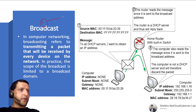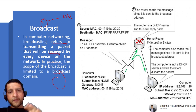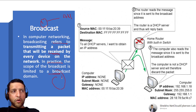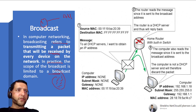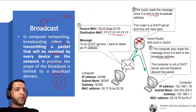Broadcast is a one-to-all transmission. In computer networking, broadcasting refers to transmitting a packet received by every device on the network. In practice, the scope of broadcast is limited to a broadcast domain. At Layer 2, the broadcast MAC address is FF:FF:FF:FF:FF:FF. For example, a DHCP discover is sent as a broadcast to all servers requesting an IP address.